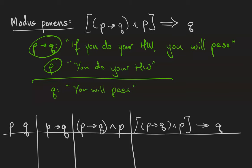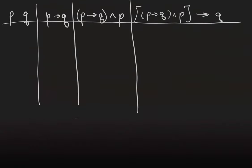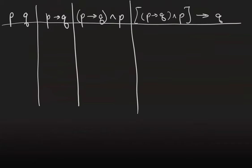We can prove modus ponens using a truth table. It's got two statement letters, so we're going to have four rows. As usual, we'll have p be true, true, false, false. q will be true, false, true, false.